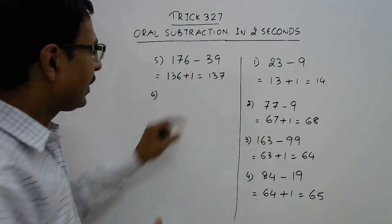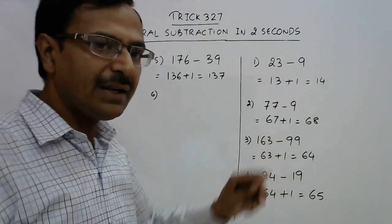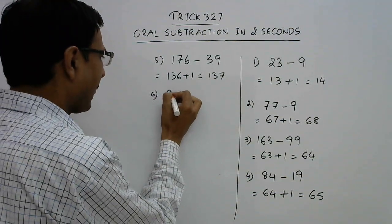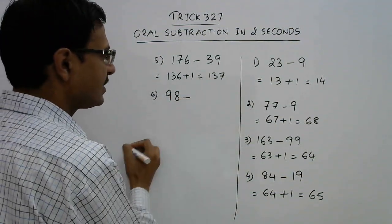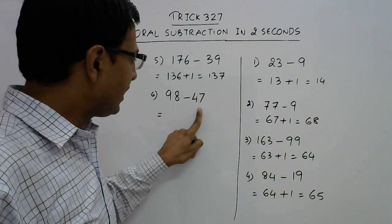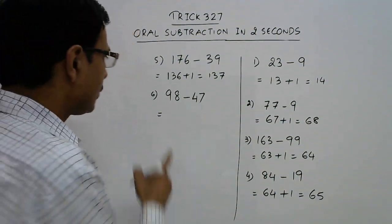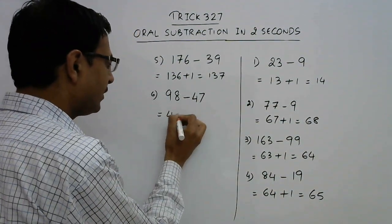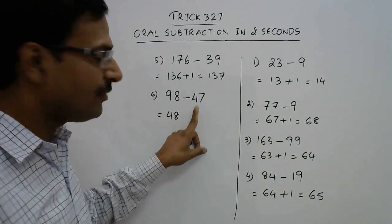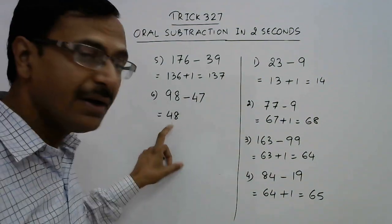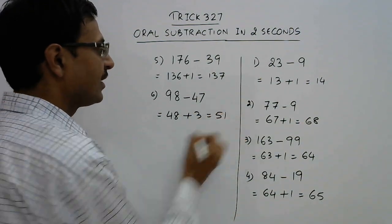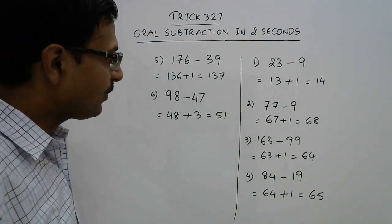I have been taking 9's in the units place, but it can be 8's also. See this very easy example: 98 minus 47. Now 47 is close to 50, so reduce this by 50, you get 48. We had to subtract 47 but we subtracted 50, so we add the excess 3 back, to get the answer as 51.